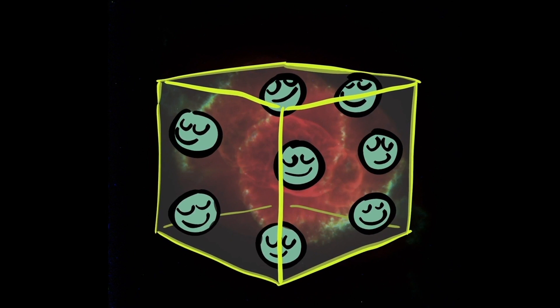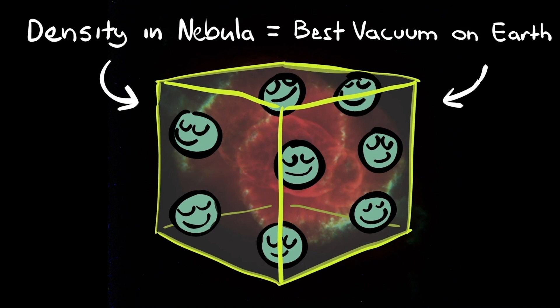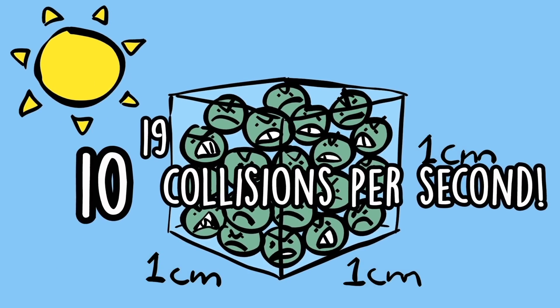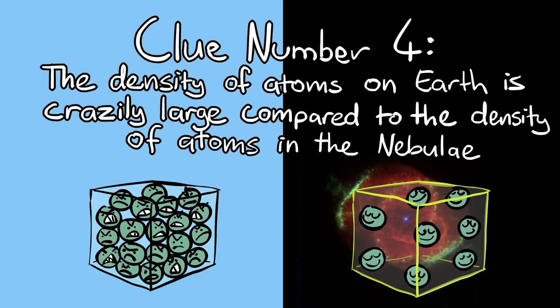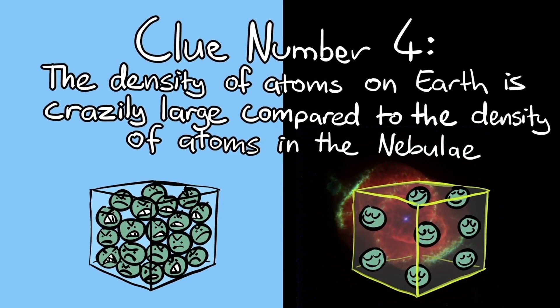The density in a nebula is purer than any vacuum ever produced on Earth. On Earth, particles collide 10 to the power of 19 times per second. So that's the final clue. The density of atoms on Earth is crazily large compared to the density of atoms in the nebulae.